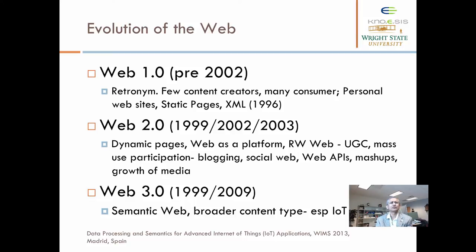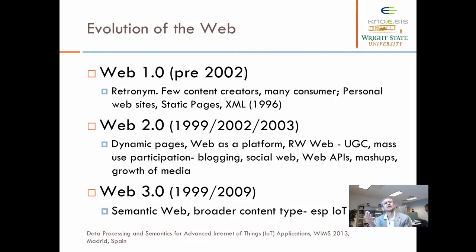Currently, people say we are in the Web 3.0 generation — the third generation of the web. There are interesting things happening, including the semantic web, meaning that the machine understands what the data is about. You may recall our discussions about data to information to knowledge and wisdom. Converting data into something meaningful is very important. Semantic web provides the technology and standards to make that possible.